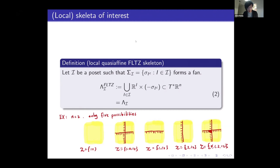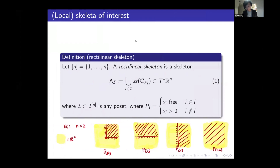One notable difference is that for FLTZ skeletons, when n equals 2, there are only five possible FLTZ skeletons constructed from simplicial fans: the zero section, the union of two lines, each individual line, and this full skeleton where there is also a piece of skeleton over the origin. But combinations of these skeletons will have other possibilities — for example, a V-shaped thing alone, or a Y-shaped thing if you take the union of two. So there are more possibilities.